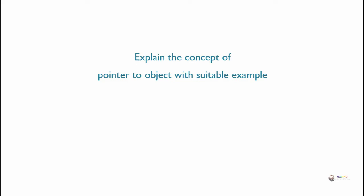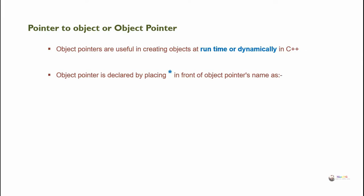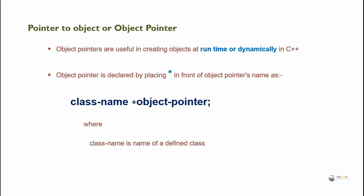Pointer to object, also called object pointer, is useful for creating objects at runtime dynamically in C++. An object pointer is declared by placing an asterisk in front of the object pointer's name as: class name asterisk object pointer. The asterisk symbol is used prior to the object pointer name, where class name is the name of a defined class.